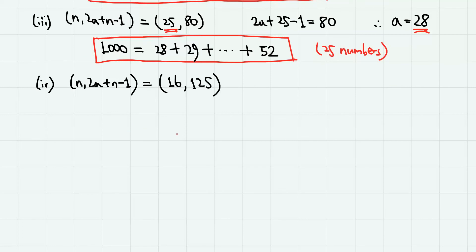Next is 16 and 125. And remember, n is the smaller number, so n must be 16. Then we have 2a plus 16 minus 1 equals 125. Therefore, a equals 55. So there are 16 consecutive numbers, and the least of them is 55. So therefore, we have 55 plus 56 plus, and we have 16 numbers. So the last one must be 55 plus 15, which is 70. So we have found another one.